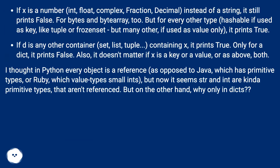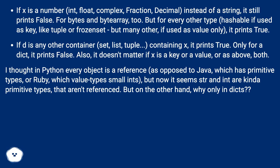If x is a number — int, float, complex, fraction, decimal — instead of a string, it still prints false. For bytes and bytearray too. But for every other type, hashable if used as key like tuple or frozenset, but many others if used as value only, it prints true. If d is any other container — set, list, tuple — containing x, it prints true. Only for a dict, it prints false.